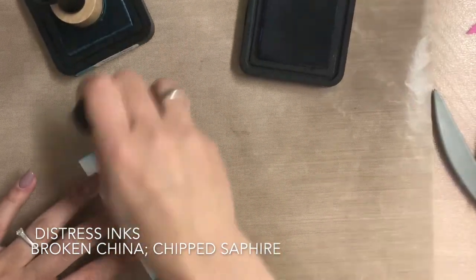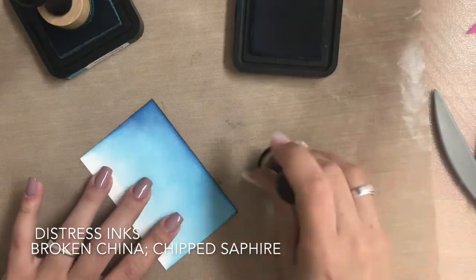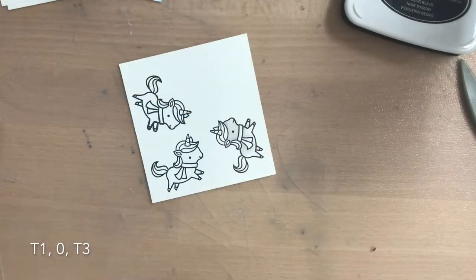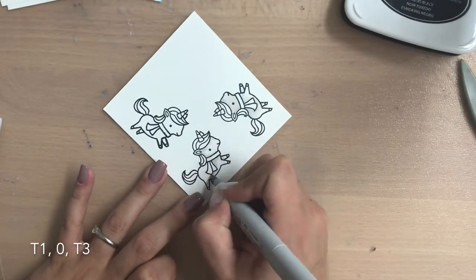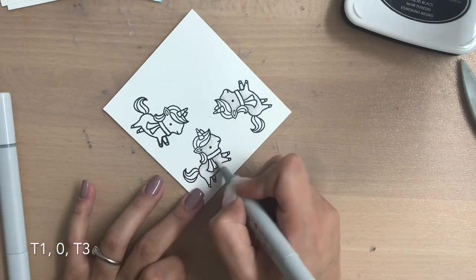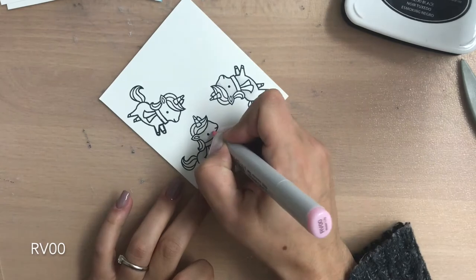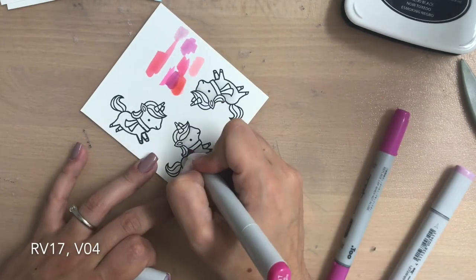On the white card panel I'm using Chipped Sapphire and Broken China and created an ink blended background. I stamped my unicorn from Lawn Fawn with Memento Tuxedo Black ink and use some Copic markers to color the unicorn in.